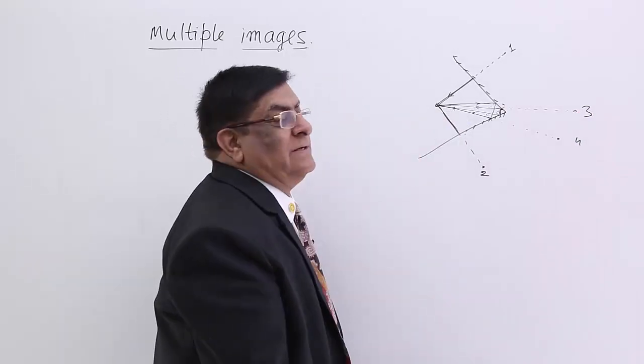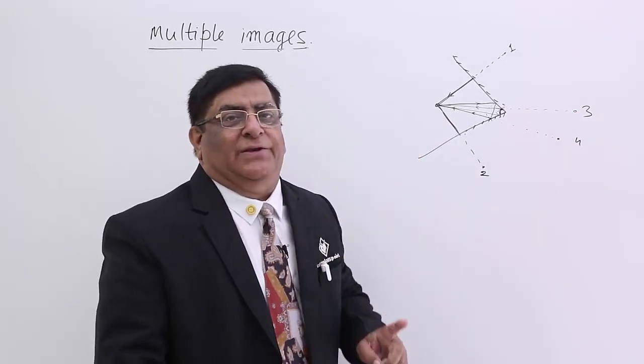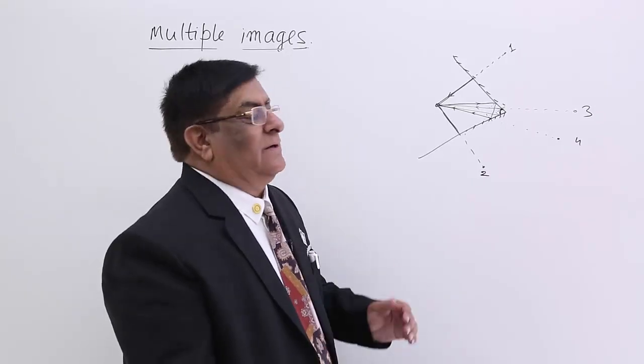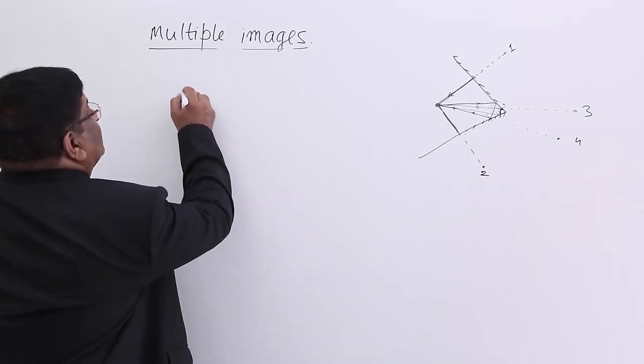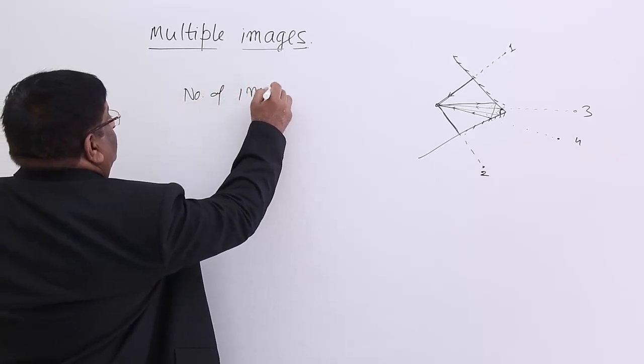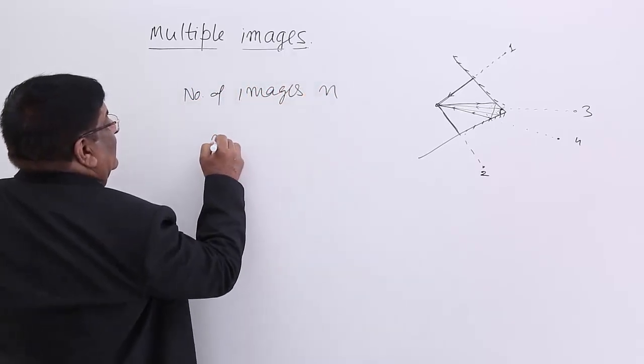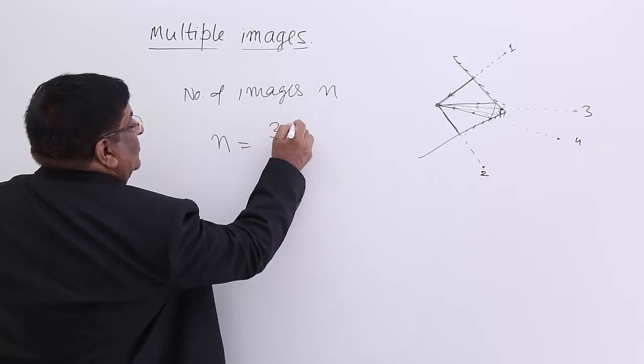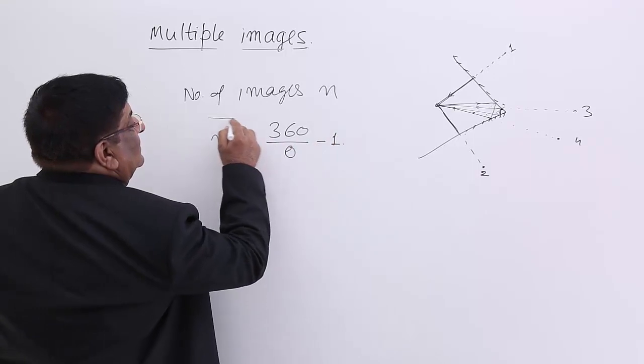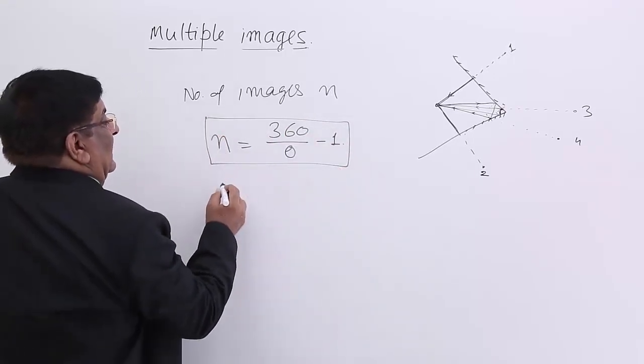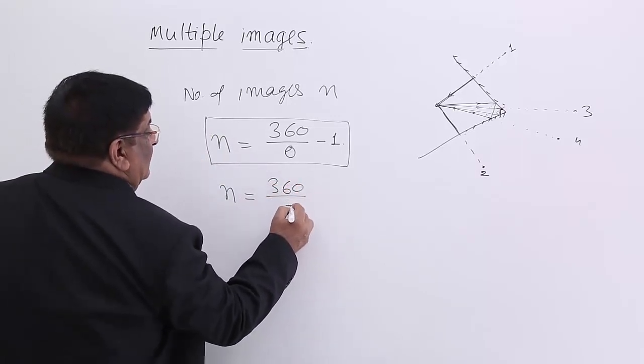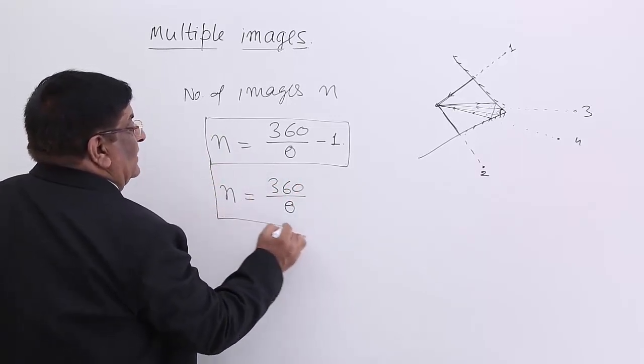For this we have done very minute calculations and you can simply remember the result. The number of images n is given by a formula 360/θ - 1, and another formula n = 360/θ. How are there two formulas?